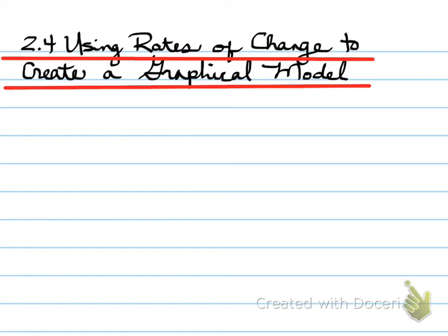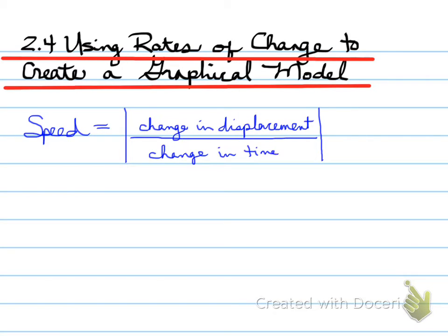Using rates of change to create a graphical model. We're going to use what we've looked at so far. For example, speed. Speed is the change in displacement divided by the change in time. Note that speed doesn't have a sign attached to it, so we put an absolute value to indicate speed is always positive — the value of speed describes the change in displacement over the change in time, written as |ΔD/ΔT|.